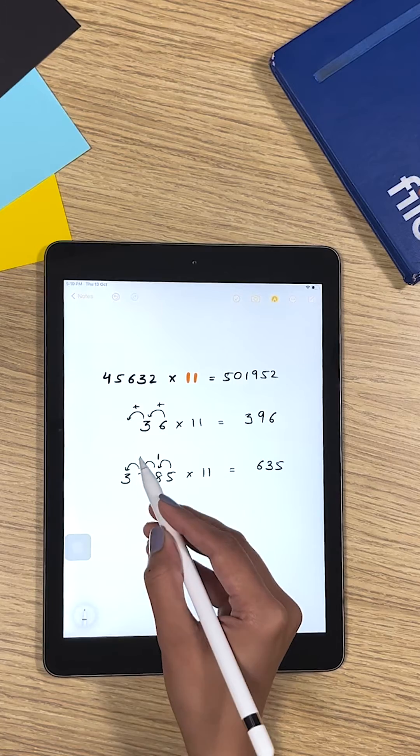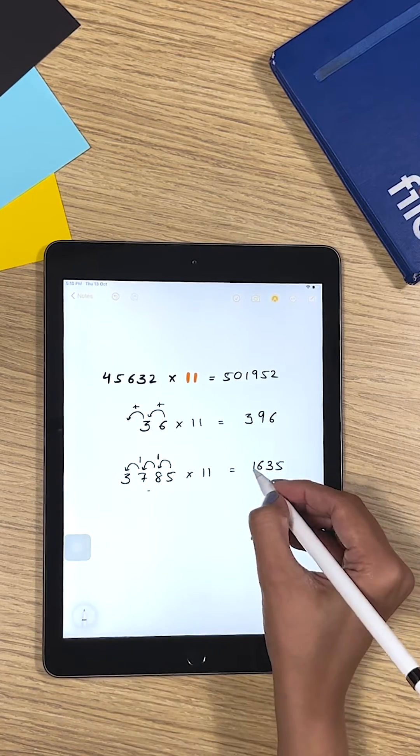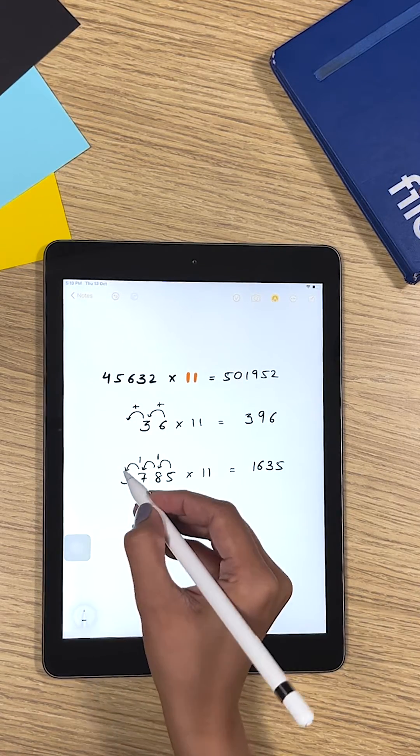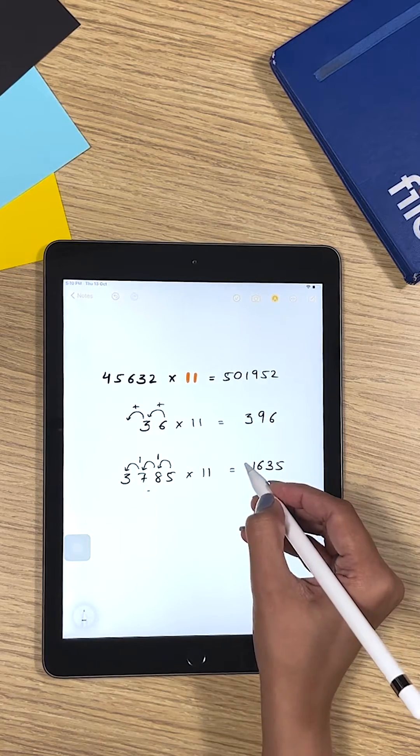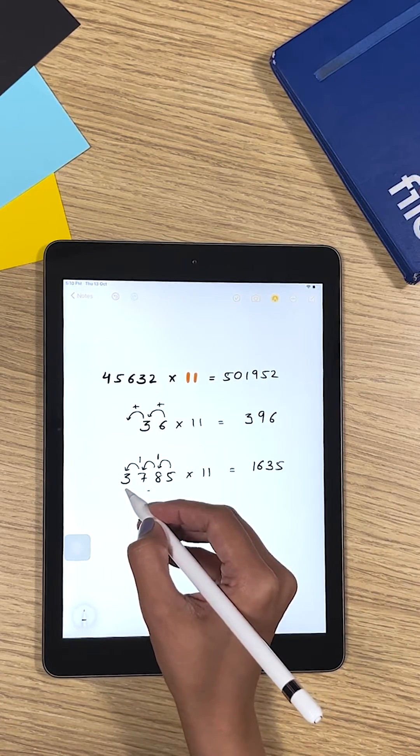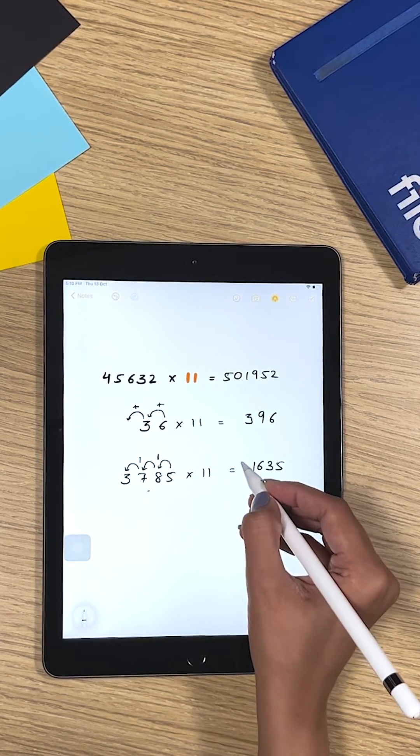That becomes 10, and that carried forward makes it 11. Again, the number got carried forward over to 3, and now we have nothing after 3, so we add that carried number and that becomes 4. So 41635.